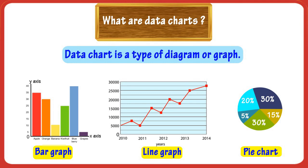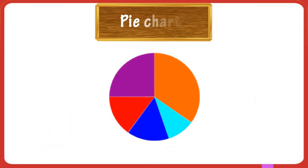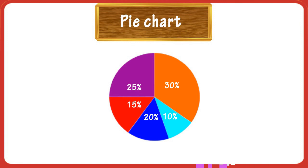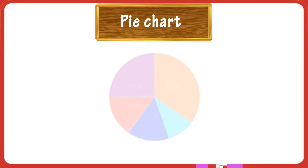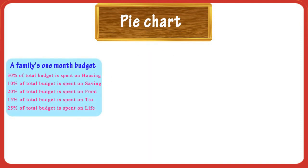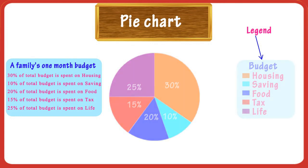Today we will be learning about pie charts. Data charts that present percentages in different groups are often displayed in a pie chart. Pie chart is good for showing how a whole is divided up. For example, how much money is spent on each thing in a budget can be represented using a pie chart.